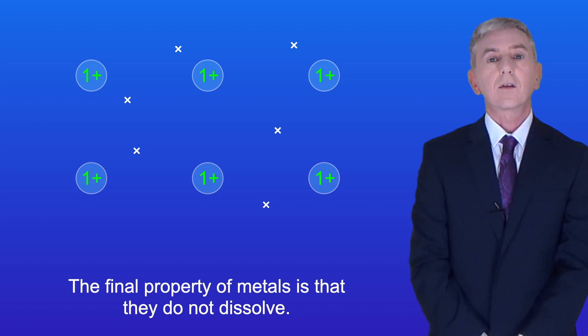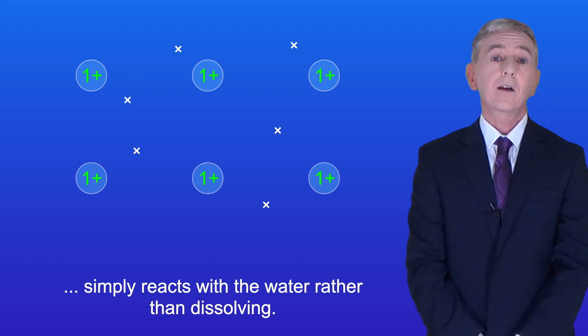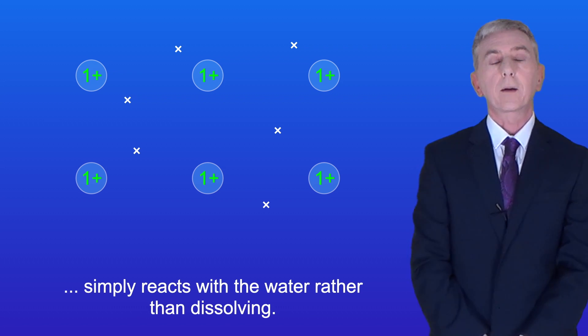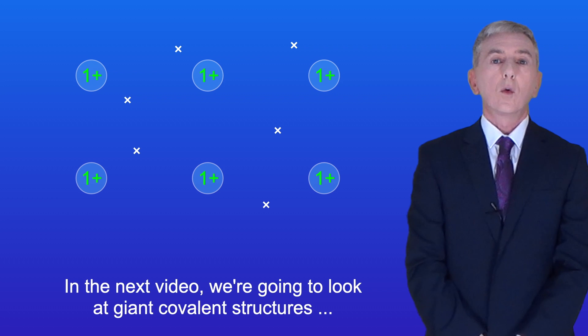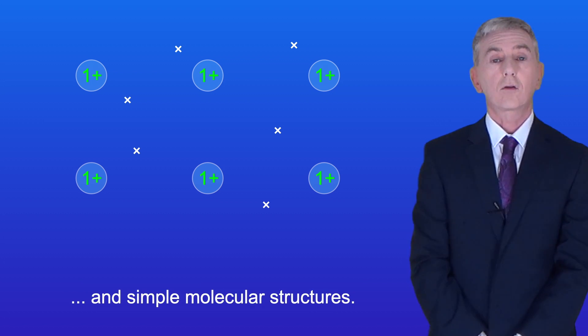The final property of metals is that they do not dissolve. When we add a metal to water, in many cases the metal simply reacts with the water rather than dissolving. In the next video we're going to look at giant covalent structures and simple molecular structures.